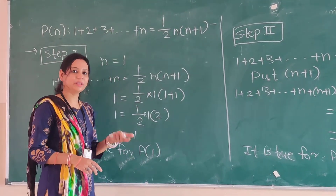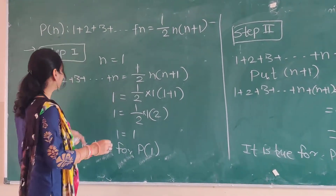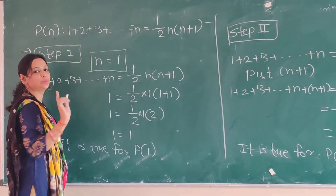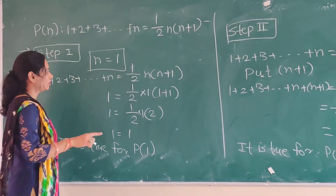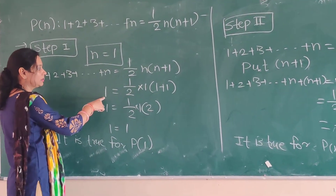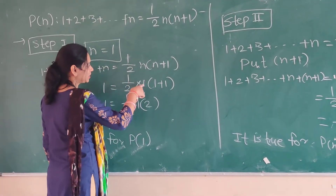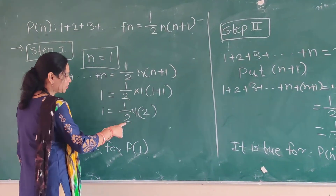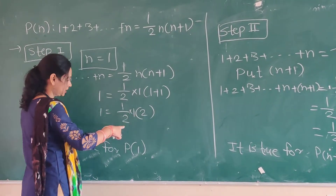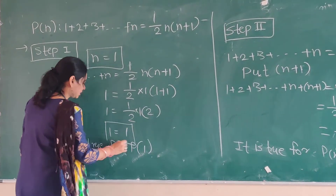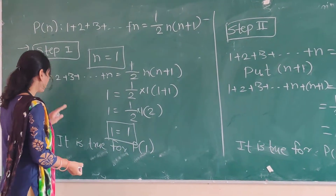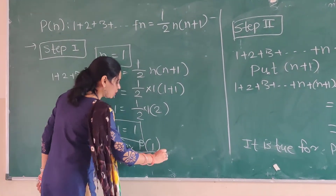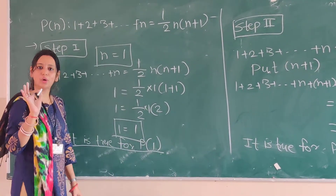According to the principle of mathematical induction, we put the value n equal to 1. So the left side value will be 1. On the right side with n equal to 1, we get 1/2 into 2, which becomes 1. That means the proposition is true for P(1).